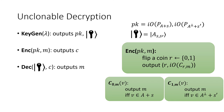To decrypt: if the random coin is 0, you run the program coherently on the coset state. Since the coset state is a superposition of vectors in the coset A+S, it will output M. If the random coin is 1, you run the program coherently on the Hadamard basis of the state, which is a superposition of vectors in the coset A-perp+S'. Therefore, it satisfies both correctness and CPA security, which would follow from the unclonability of the decryption key.